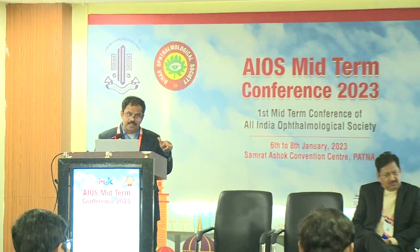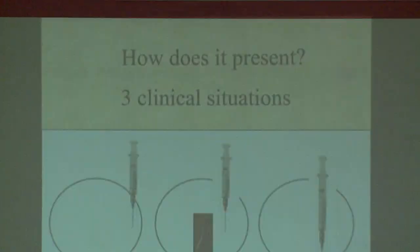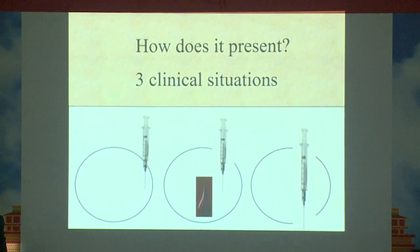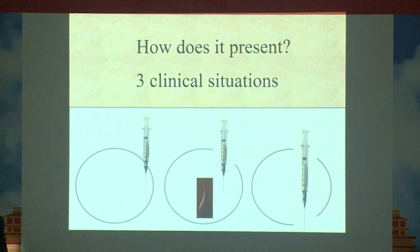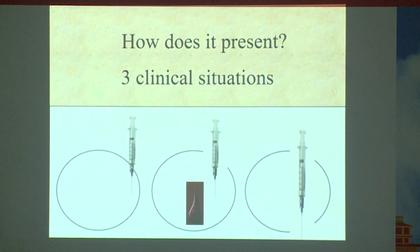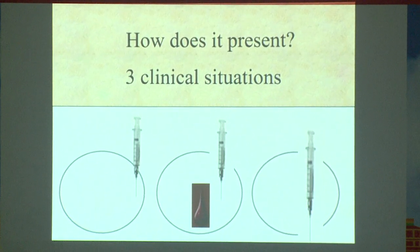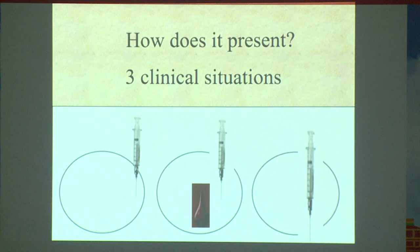Local anesthesia related: if you are looking at it, this is a needle which you are blindly inserting through the side of the globe and anything and everything can happen. Usually the first-year PG is the person who does that. There are three clinical situations. The first is that the astute clinician found out the needle is inside the globe and immediately took it out. The second situation: the person injected inside the globe without realizing it. The third situation is even more tricky — you went inside and then went outside also, and in the correct plane you injected.